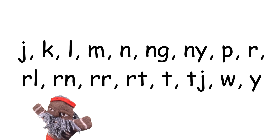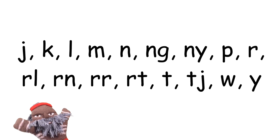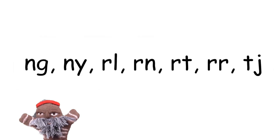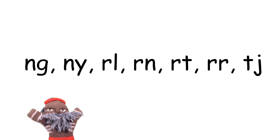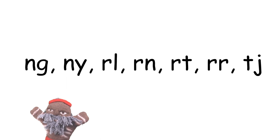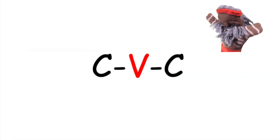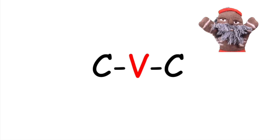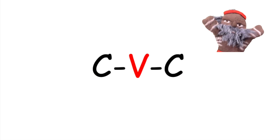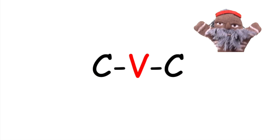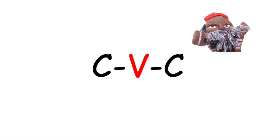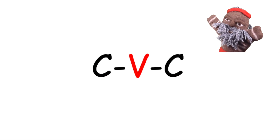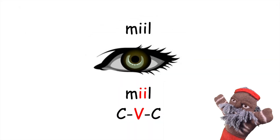All the other letters are called consonants. Some consonants have two letters, but they represent one sound. Words in these languages are made up of syllables. Syllables are the claps in a word. Some syllables are made up of a consonant, a vowel and a consonant.